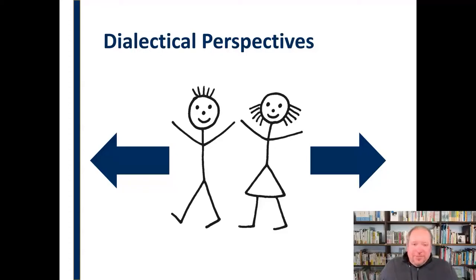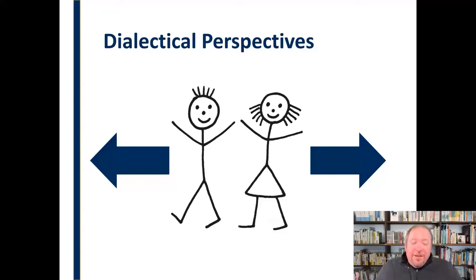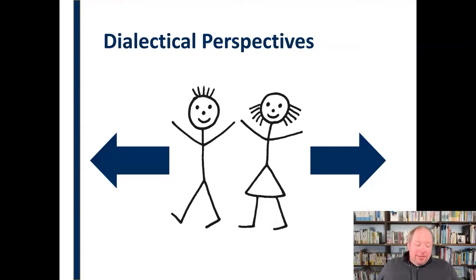Or we can have differences in terms of expression versus privacy — I think we ought to share everything, and the other person thinks no, we ought to keep this to ourselves. Things get complicated when we have those tensions within ourselves, and then you add in that there's another person involved experiencing the same things — what if those things don't match up?